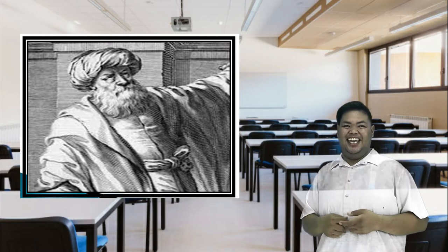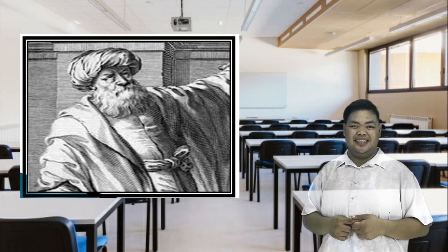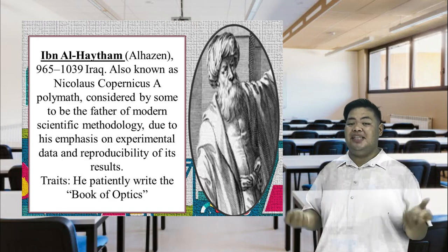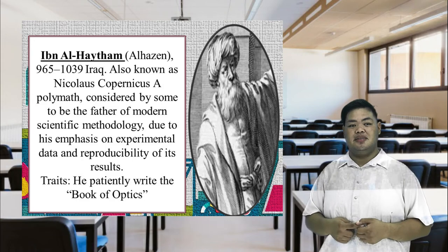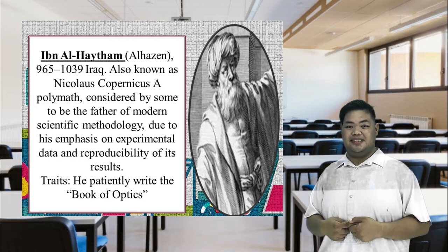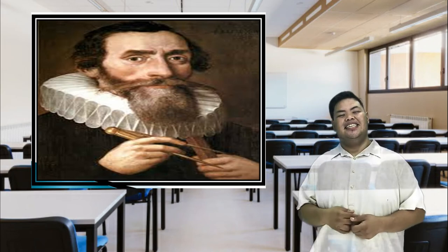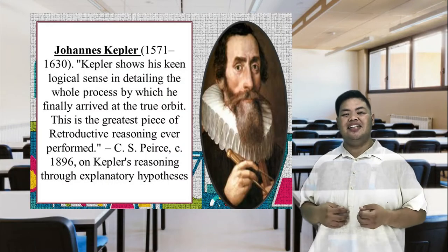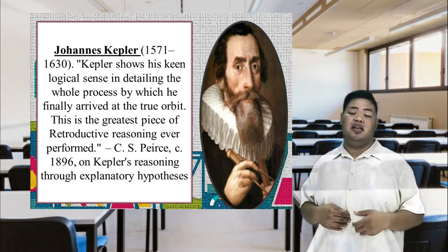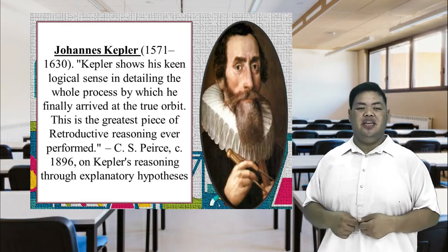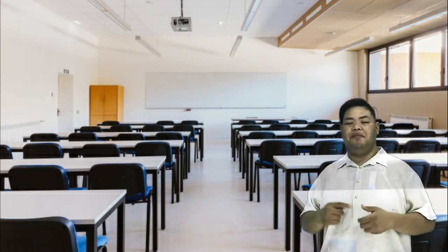That is correct. He is Nicholas Copernicus, or Ibn Alhazen, considered by some to be the father of modern scientific methodology, due to his emphasis on experimental data and reproducibility of each result. One of the traits of Nicholas Copernicus is that he patiently writes the book of optics. Can you guess the name of this scientist? Yes, your guess is correct. He is Johannes Kepler. Kepler shows his keen logical sense in detailing the whole process by which he finally arrived at the true orbit. This is the greatest piece of retrospective reasoning ever performed.